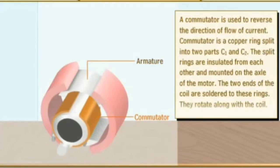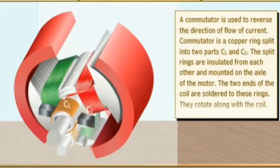A commutator is used to reverse the direction of flow of current. Commutator is a copper ring split into two parts, C1 and C2. The split rings are insulated from each other and mounted on the axle of the motor. The two ends of the coil are soldered to these rings. They rotate along with the coil.